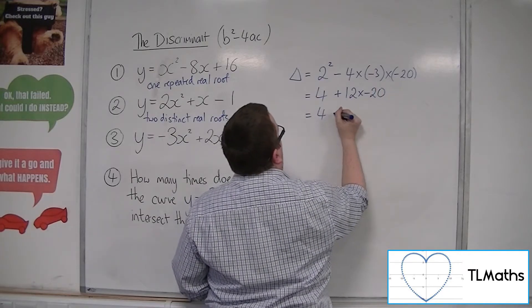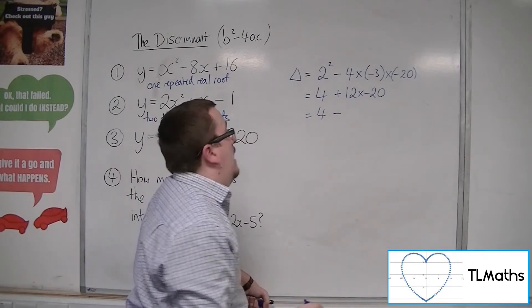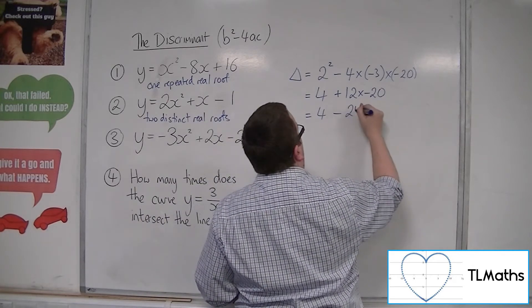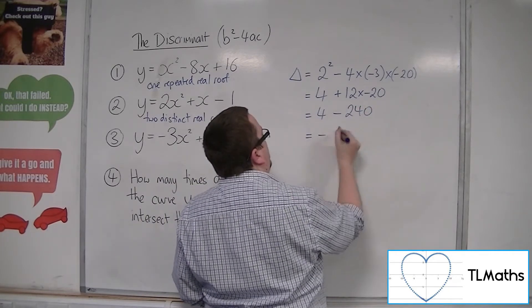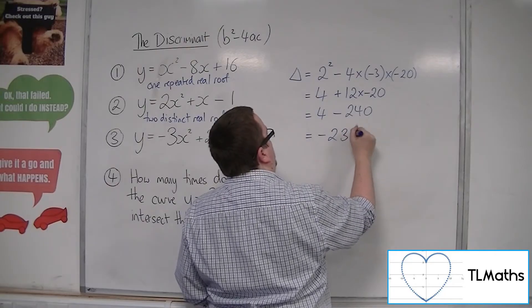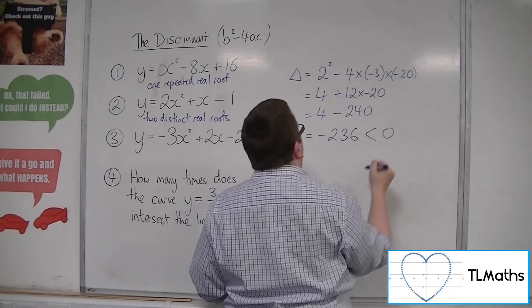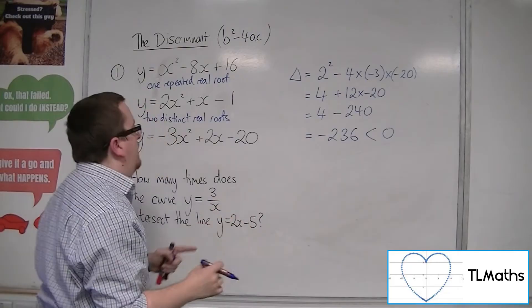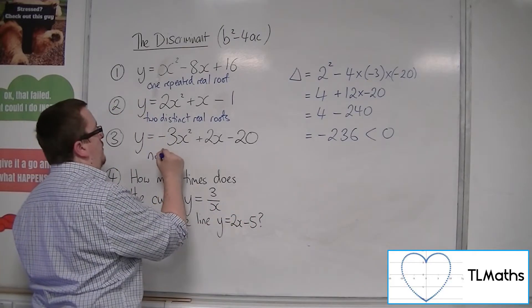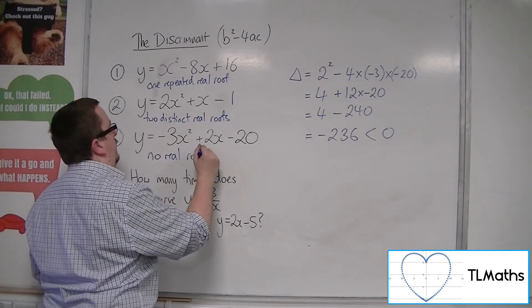So 4, take away 240, so that's minus 236, which of course is negative. So that must mean that there are no real roots in this case.